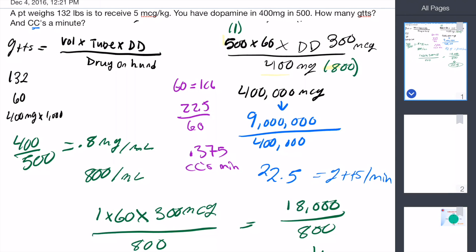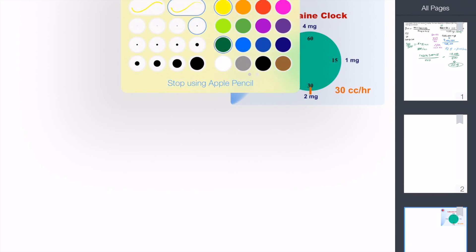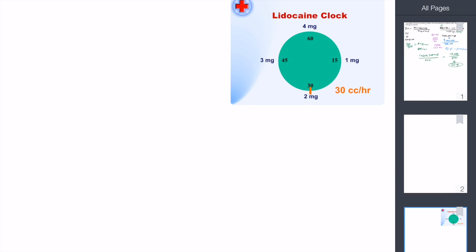And so we can check this because I was curious. I'm sure you've all seen the lidocaine clock. Essentially, it's just like a little clock to help you gauge how much medications you give, and it's pretty easy. For 1 milligram you'll give 15 drops, for 2 you give 30, 3, 4, 5, and so on.